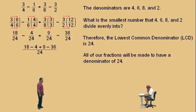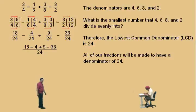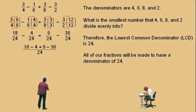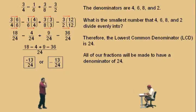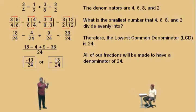Don't get scared — this is a tough one. Work left to right: eighteen subtract four is fourteen. Fourteen plus nine is twenty-three. Twenty-three subtract thirty-six: thirty-six subtract twenty-three is thirteen, so twenty-three subtract thirty-six is negative thirteen. Our answer is negative thirteen over twenty-four. Notice this negative answer can also be written as negative thirteen over twenty-four — these are the same. That was a tough problem, so practice your addition and subtraction. We've got plenty of videos for you to look at. That's it for now — we'll see you again soon.